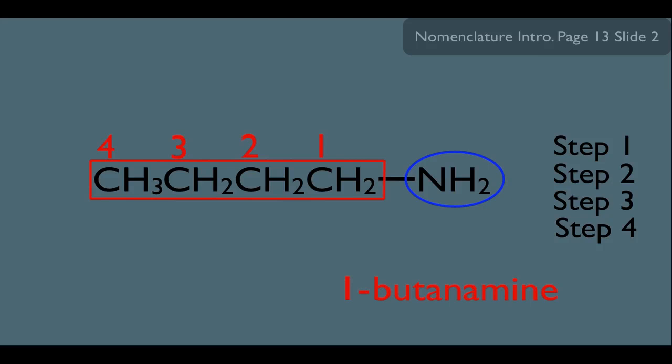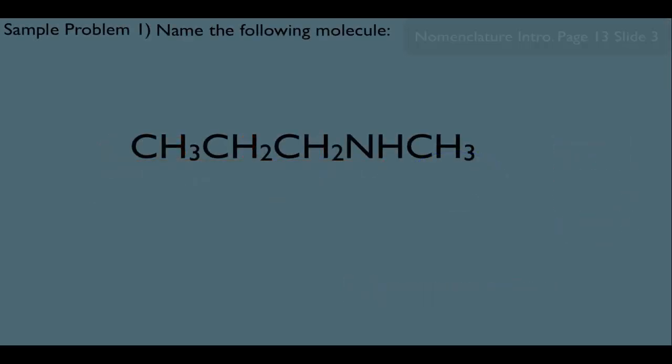And again, think about what the name is telling you about this structure. Butane means four carbons. Amine means there's an amine group. And one is telling us on which carbon of the alkane is the amine on. However, let's look at some sample problems to see some of the nuances of naming amines. Now careful, if you're on your orgo test and they give you this molecule and they ask you to name it.